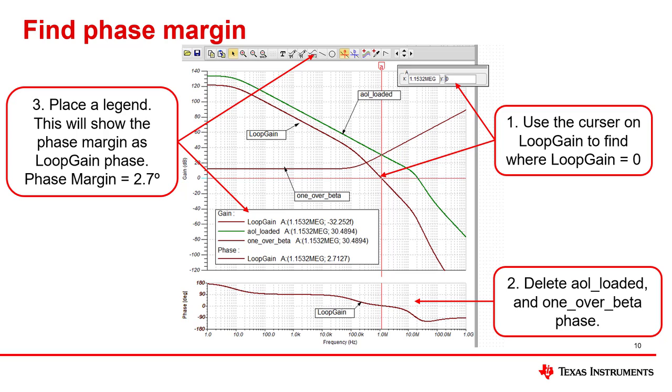The second step is to delete the curves that we don't care about. That is, delete the AOL loaded and 1 over beta phase graph. The only phase plot we care about is loop gain phase, as that's the one that gives us phase margin.